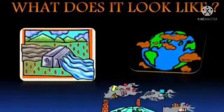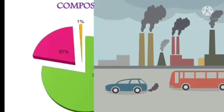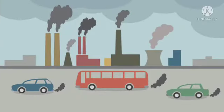First, we shall discuss about air. Air is a mixture of gases. The two main gases present in air are nitrogen and oxygen. Nitrogen makes up 78 percent of the air, whereas oxygen makes 21 percent of the air. The remaining 0.1 percent is occupied by carbon dioxide, water vapor, argon, and other gases.